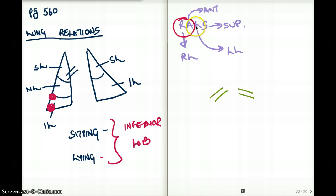And for the left lung, it's going to be superior to the left bronchus. That's why the S is there.